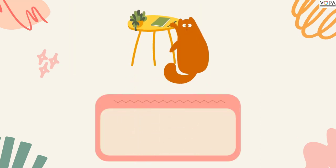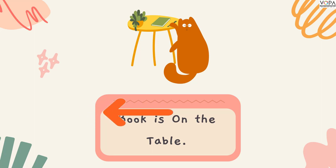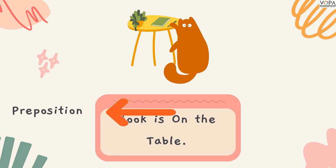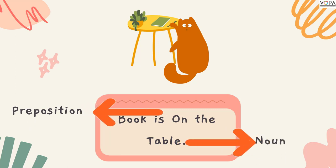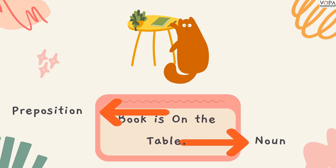See the other example. 'Book is on the table.' Here, 'book is' are the other words in this sentence, and 'on' is a preposition. 'The table' — table is the object of the preposition, or noun.